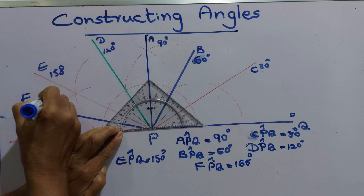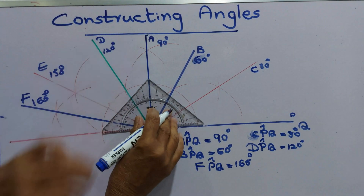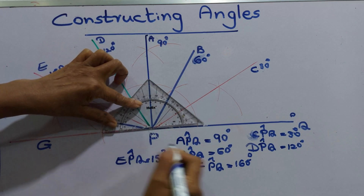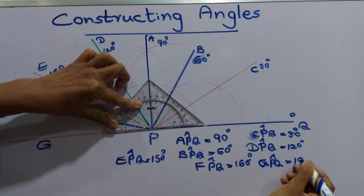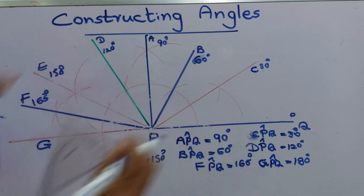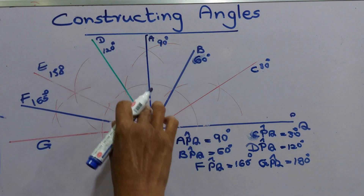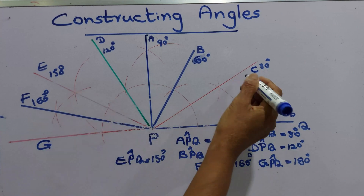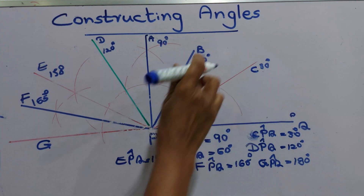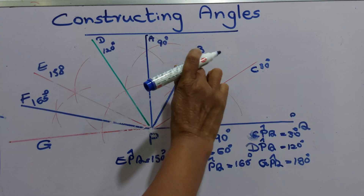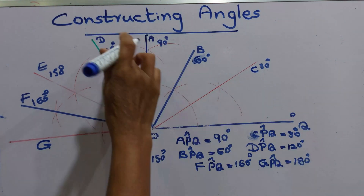We'll name this angle F — angle FPQ is 165 degrees. This is a straight angle — angle GPQ is 180 degrees. Now we measure: CPQ is 30 degrees, BPQ is 60 degrees, APQ is 90 degrees, DPQ is 120 degrees.